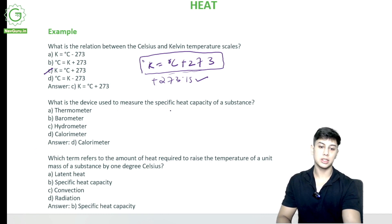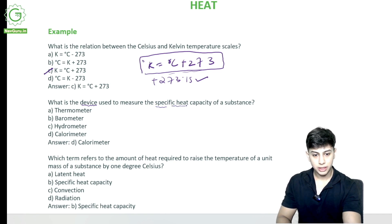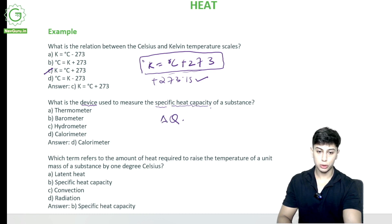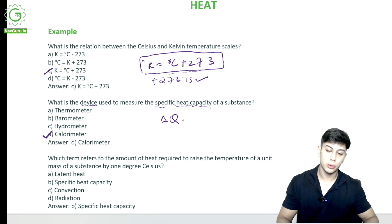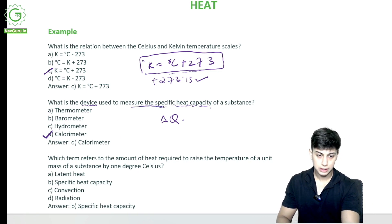What is the device used to measure the specific heat capacity of a substance? The options are thermometer, barometer, hydrometer, and calorimeter. The answer is calorimeter — that is used to measure specific heat capacity.